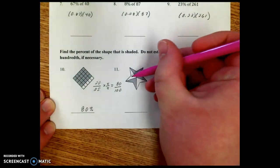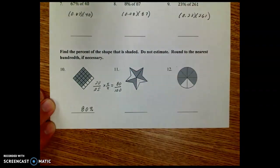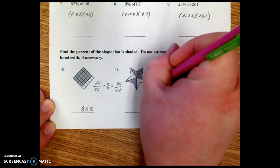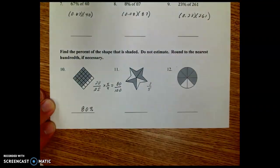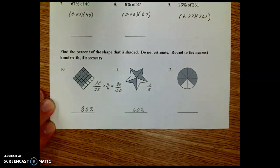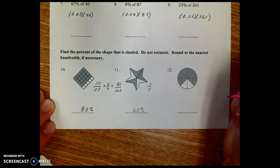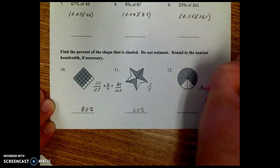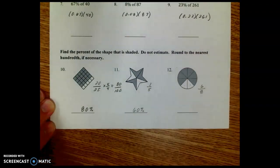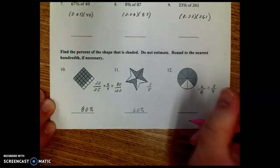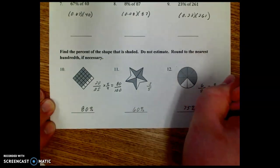In the star, we have 1, 2, 3, 4, 5 sections. 3 of those 5 sections are shaded. 3 fifths is one of those common fractions we should have memorized. That's 60%. And in number 12, we have 1, 2, 3, 4, 5, 6, 7, 8 sections. 6 out of 8 of them are shaded. 6 out of 8 reduces to 3 fourths, which is 75%.